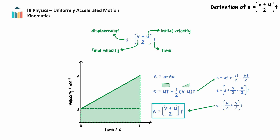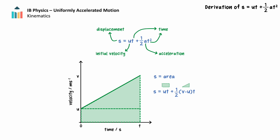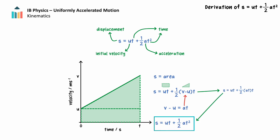Next, we'll derive the formula for displacement when initial velocity, time, and acceleration are known. Displacement is equal to the product of initial velocity and time, plus one-half times the product of acceleration and time squared. The area under the velocity-time graph equals the area of the rectangle — initial velocity multiplied by time — plus the area of the triangle — one-half the change in velocity multiplied by time. We know the change in velocity, v minus u, is equal to the product of acceleration and time. Substituting this and algebraic rearrangement yields: s equals ut plus one-half at squared.